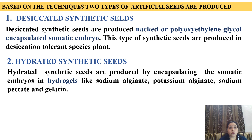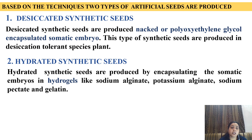Based on the technique, two types of artificial seeds are produced. First is desiccated synthetic seeds, and second is hydrated synthetic seeds. Desiccated synthetic seeds are produced by naked or polyoxyethylene glycol encapsulation of somatic embryos. This type of synthetic seeds are produced in desiccation-tolerant species. Hydrated synthetic seeds are produced by encapsulating the somatic embryos in hydrogels like sodium alginate, potassium alginate, sodium pectate, and gelatin.